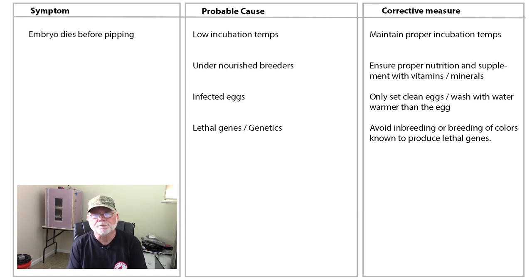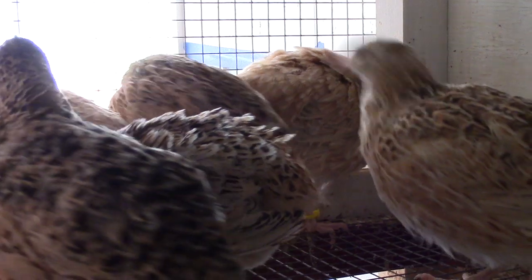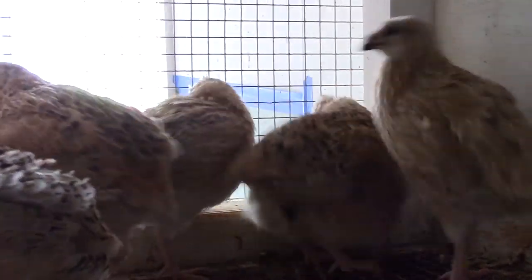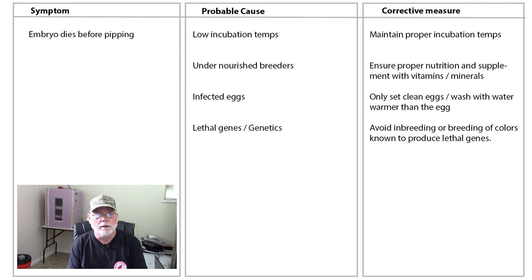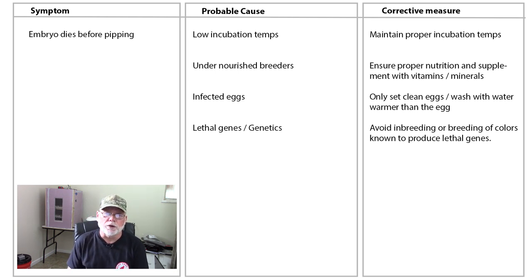Lethal genes fall under genetics. If you're doing a lot of inbreeding, that can produce lethal genes. Also, some color variations — like in the golden Manchurians — if you're breeding goldens back to goldens, they have an allele that is a lethal gene and can affect your hatch rates. So avoid inbreeding and avoid breeding colors that are known to carry the lethal gene and you should be okay.